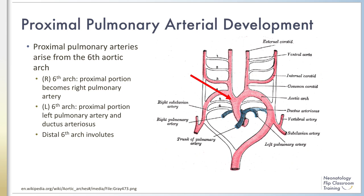Early in fetal development, the proximal main pulmonary artery develops from the truncus arteriosus. As shown in the figure in blue, the distal main pulmonary artery and the proximal right and left pulmonary arteries arise from the sixth aortic arch.